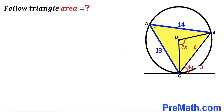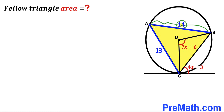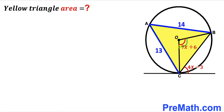Welcome to pre-math. In this video we have got this yellow shaded triangle ABC fully inscribed in a circle with center O, such that chord AB length is 14 units, chord AC length is 13 units. We also have triangle BOC such that angle BOC is represented by 7x plus 6 degrees, and the angle with the tangent line is 4x minus 3 degrees. Our task is to calculate the area of this yellow shaded triangle ABC.